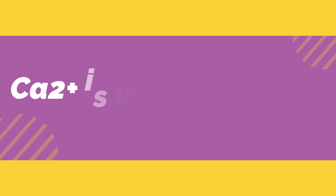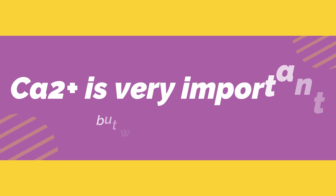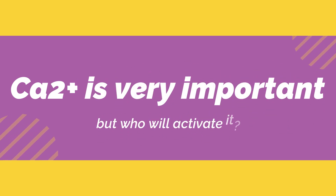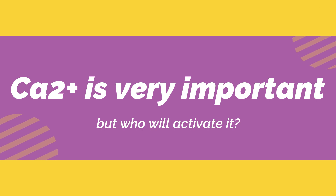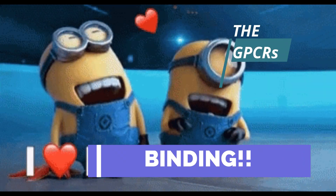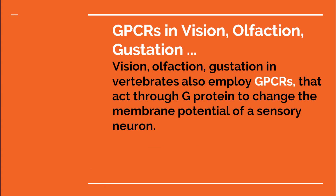A very interesting thing is that calcium is extremely important, but even more important is the fact that it has to be activated. This is why GPCRs are so important. They are important for vision, olfaction, and gustation in vertebrates, and also for G-protein signalling to change the membrane potential of a secondary neuron.